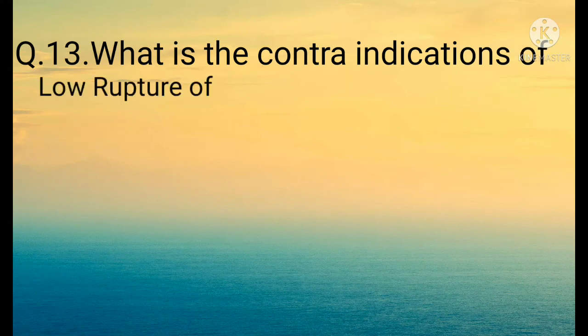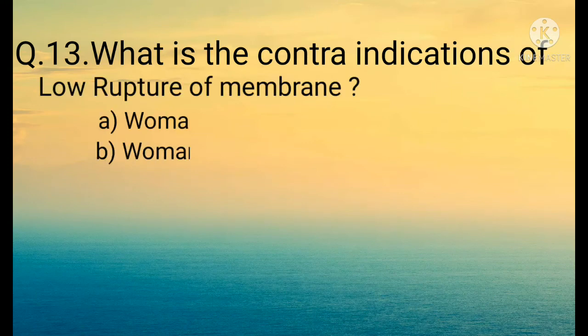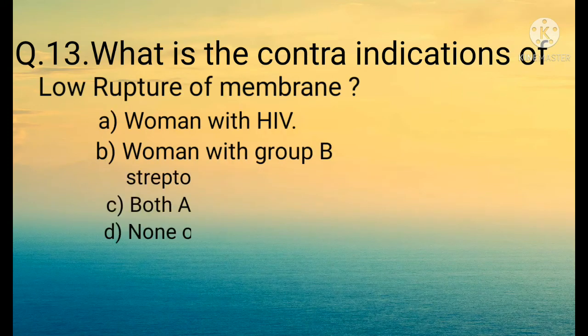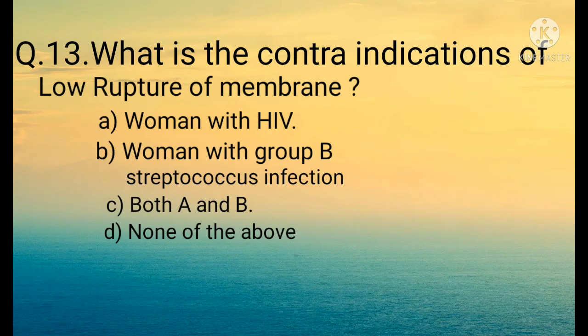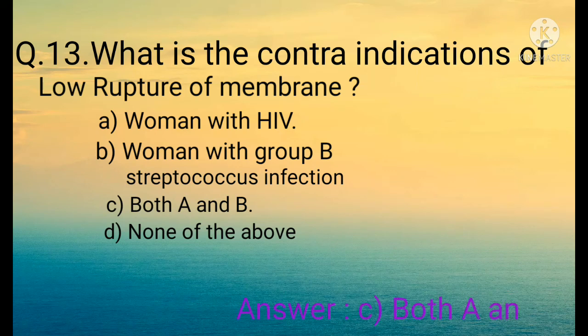Question number thirteen: What are the contraindications of low rupture of the membrane? Option A: Women with HIV, Option B: Women with Group B Streptococcus infection, Option C: Both A and B, Option D: None of the above. The correct option is Option C: Both A and B.